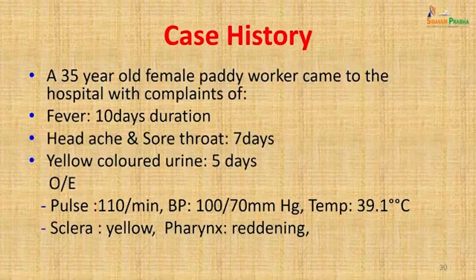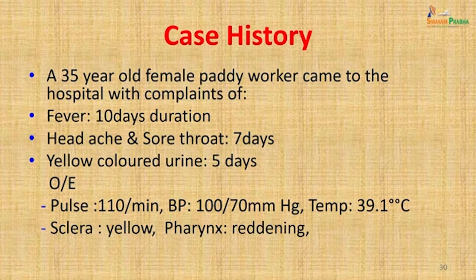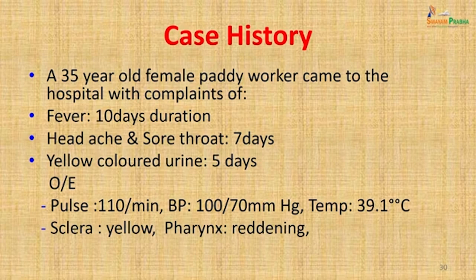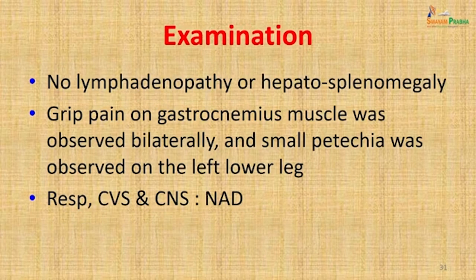Moving on to the next zoonotic disease — leptospirosis. A 35-year-old female paddy worker came to the hospital with complaints of fever of 10 days duration, headache and sore throat of 7 days duration, and yellow-colored urine of 5 days duration. On examination her pulse was 110 per minute, BP was 100/70 mmHg, temperature was 39.1°C, sclera was yellow, and pharynx showed reddening. On examination no lymphadenopathy or hepatosplenomegaly was seen, but there was calf muscle pain bilaterally and small petechiae on the left lower leg.